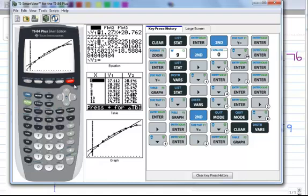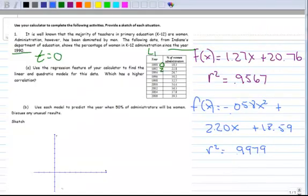Super. Great. According to part A, the quadratic looks better. Part B says use the model. Let's go back to the paper here.